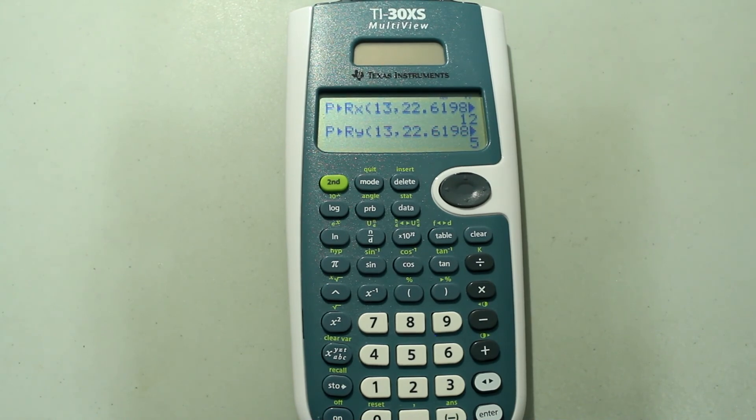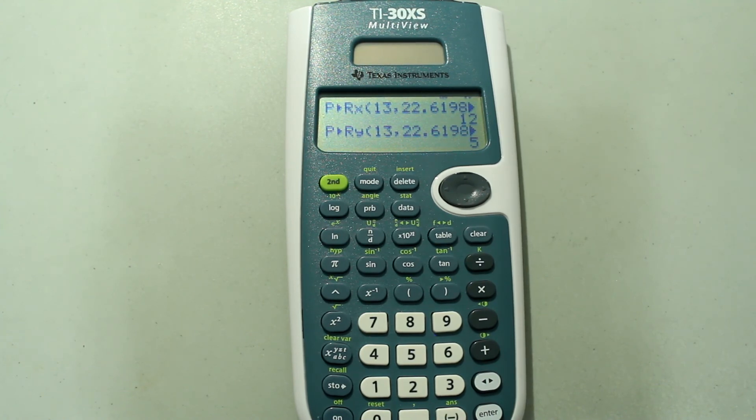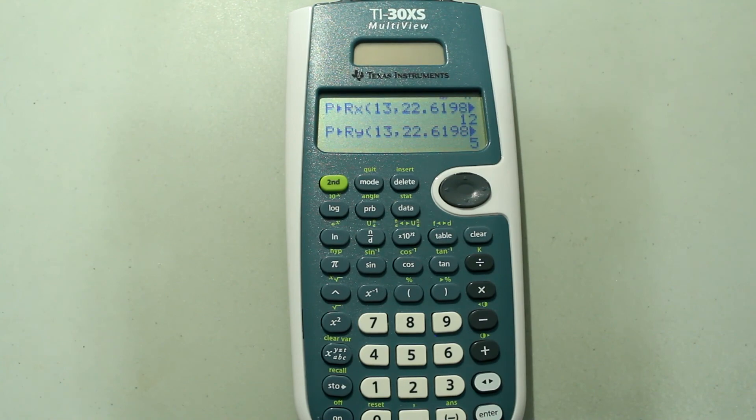There you have it. That's how to use the TI-30XS multi-view to convert from rectangular to polar and from polar to rectangular forms. I hope this video helps in some way. As always, if you have any questions, feel free to leave them in the comment section. I'll try my best to help. If you haven't already, please subscribe. Check out other videos on my channel, especially the graphing and scientific calculator tutorial series and the MATLAB series. Until next time, take care guys.